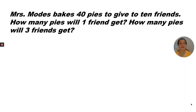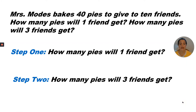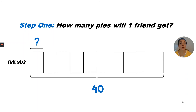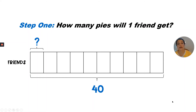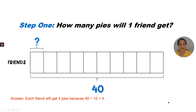Mrs. Mode bakes 40 pies to give to ten friends. How many pies will one friend get? How many pies will three friends get? Step one: how many pies will one friend get? We know we have ten friends and there are 40 pies in all. We can count by tens until we get to 40: ten, twenty, thirty, forty. Each friend will get four pies because 40 divided by 10 equals four.